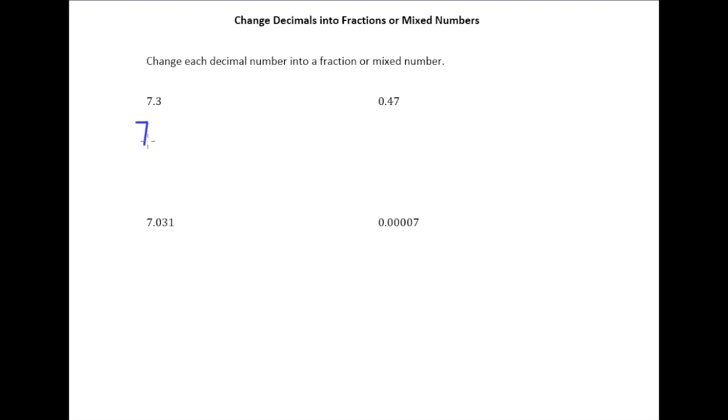So 7.3, well an acceptable way to say it is not the proper way to say it. So how do we say 7.3 properly? Well we learned from the last video that you would say 7 and 3 tenths. Because the 3 ends in the tenths place, so this is 7 and 3 tenths.